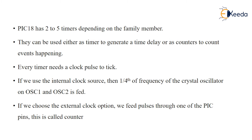In increment mode, it starts counting from 0, 1, 2, 3, 4, 5, up to 10. When it reaches 10, it resets the counter and raises the overflow flag. In down-counting mode, it starts from 10, then 9, 8, 7, down to 0, and resets the counter.